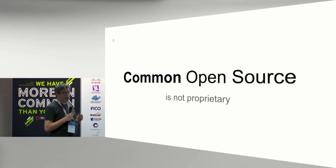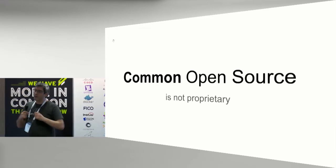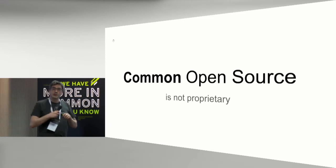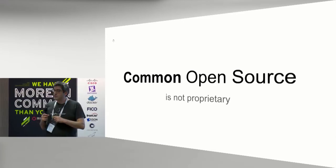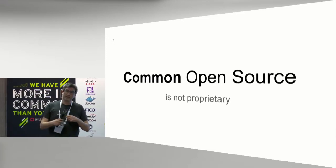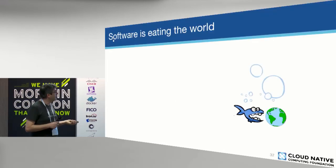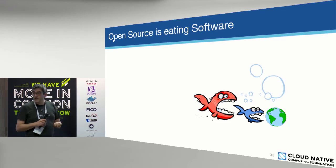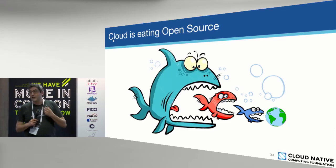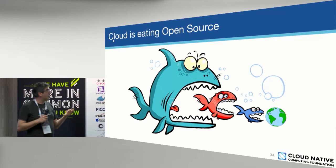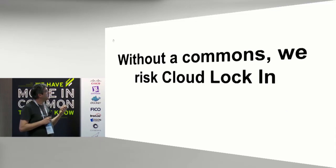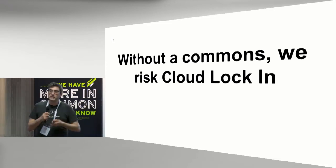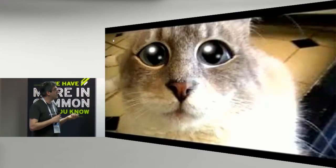This gives you a way to have common open source — not single-vendor open source, but open source that is truly shared and trusted by everybody: from end users to vendors, SIs, consultancies, cloud providers, the lot. Software is eating the world. Open source is eating software. And cloud is now eating open source. So we need a defense against that. The commons provides us a way out of the lock-in puzzle created by the huge growth of cloud.